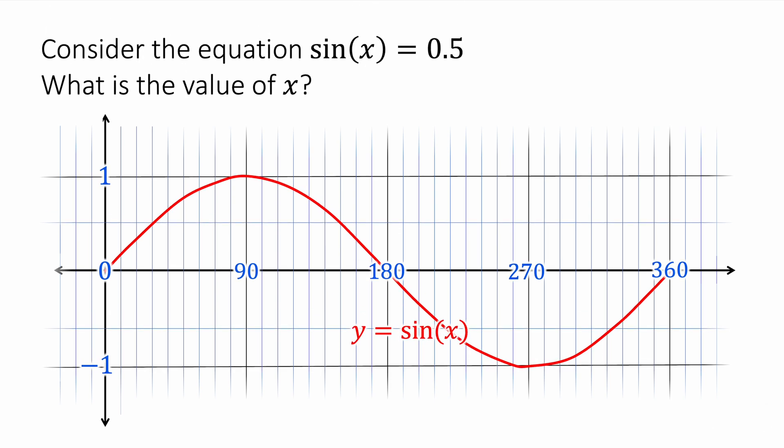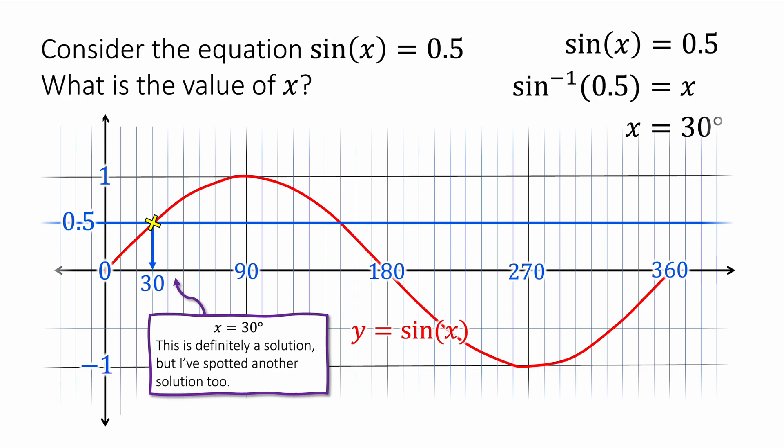Consider the equation sin(x) = 0.5. What is the value of x? Well, the first thing we do is write sin(x) = 0.5 and take the inverse of sin, and we get sin⁻¹(0.5) = x, which gives us 30 degrees. So on a graph this makes sense because I can see a clear solution at 30 degrees there. This is definitely a solution, but some of you might have spotted another solution.